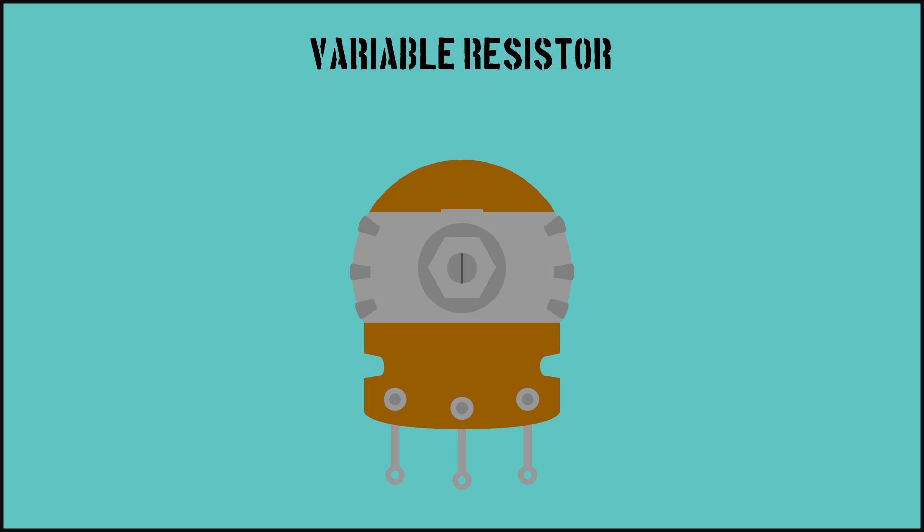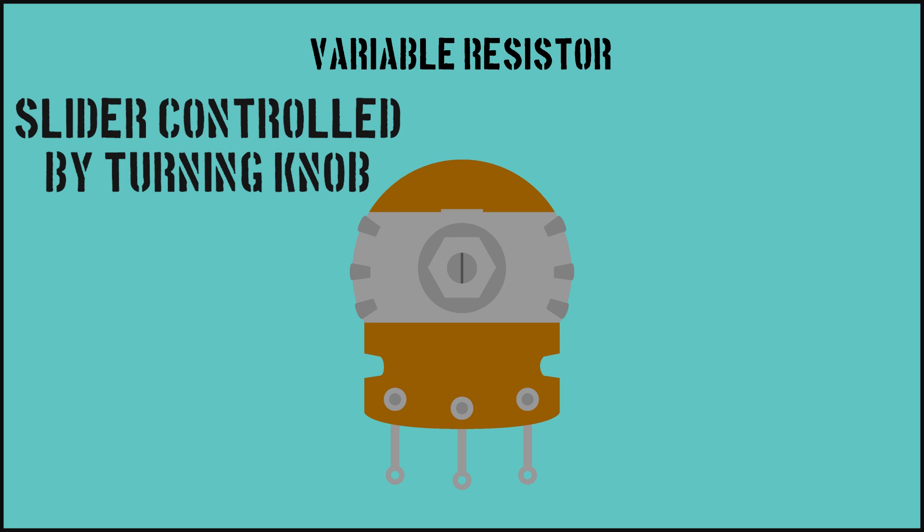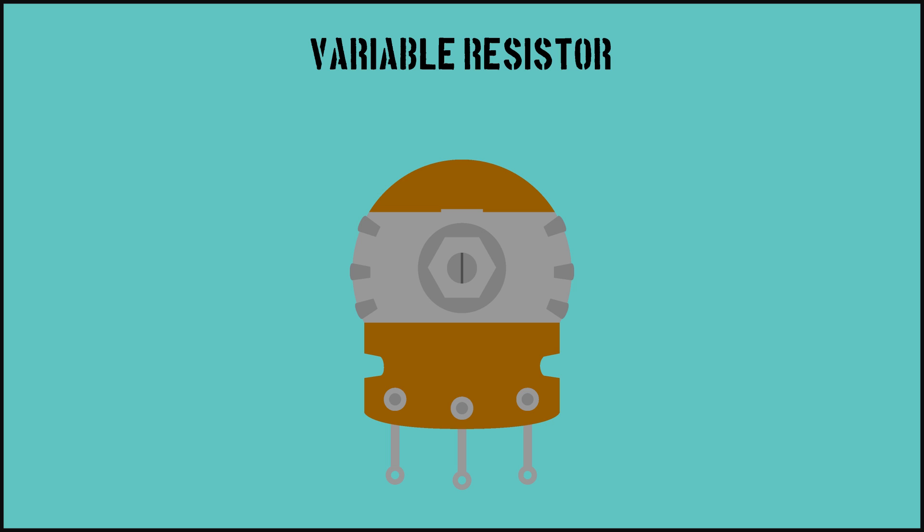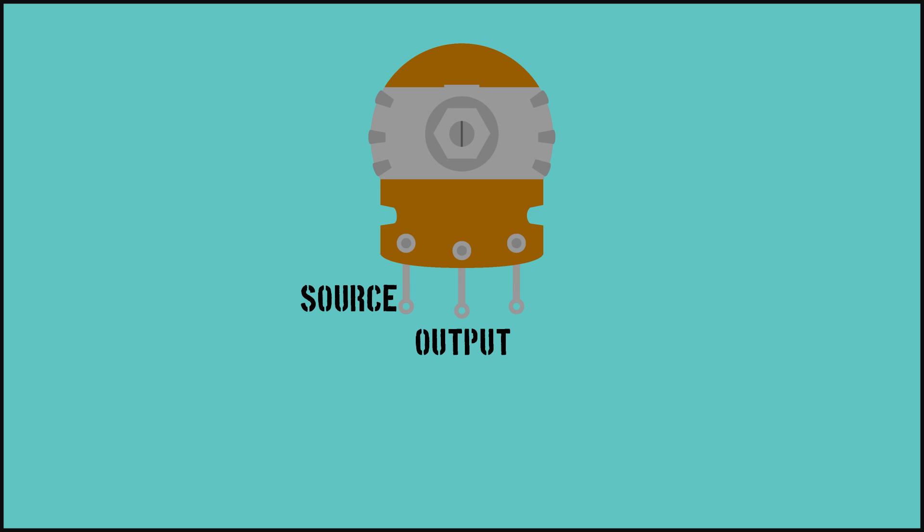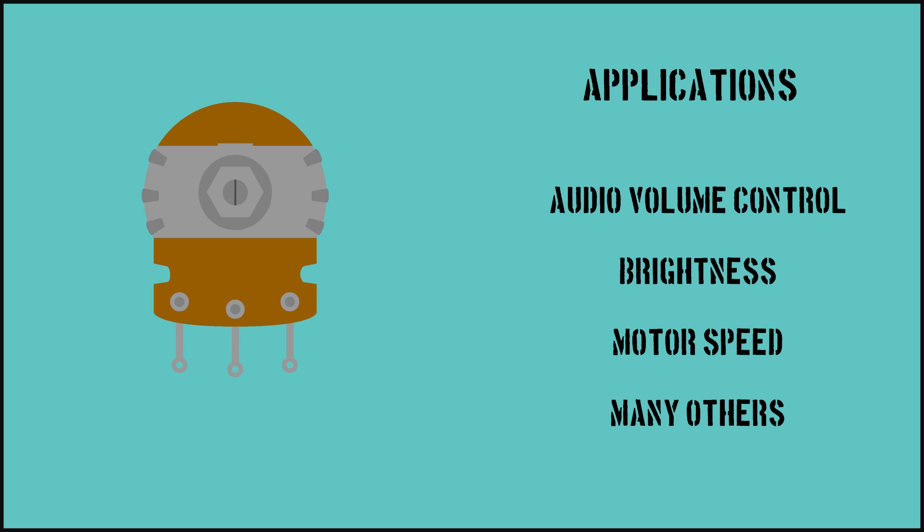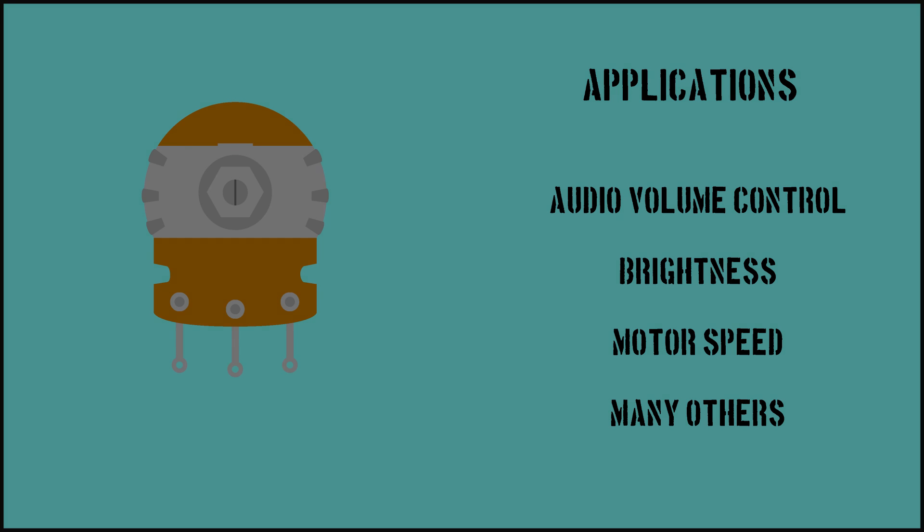Then, there are variable resistors, which have one resistor element and a slider that changes the position on the element, therefore changing the resistance. Typically, they have three leads, the first being the source, the second, output, and the last, ground. They can control things like volume, brightness, or motor speed.